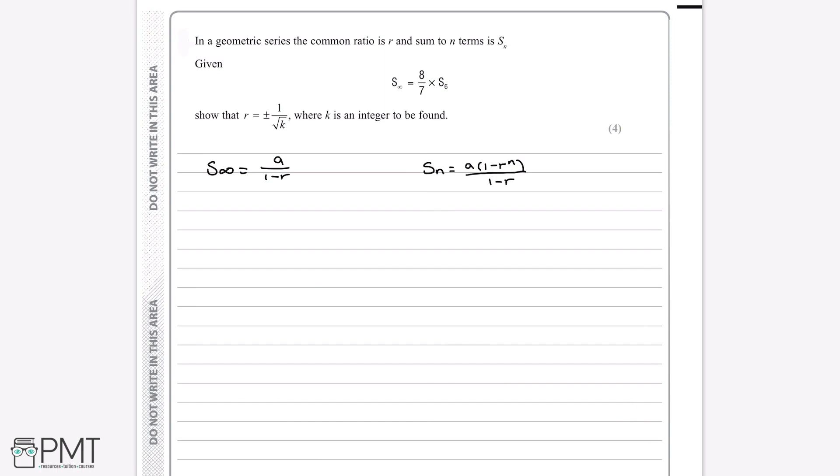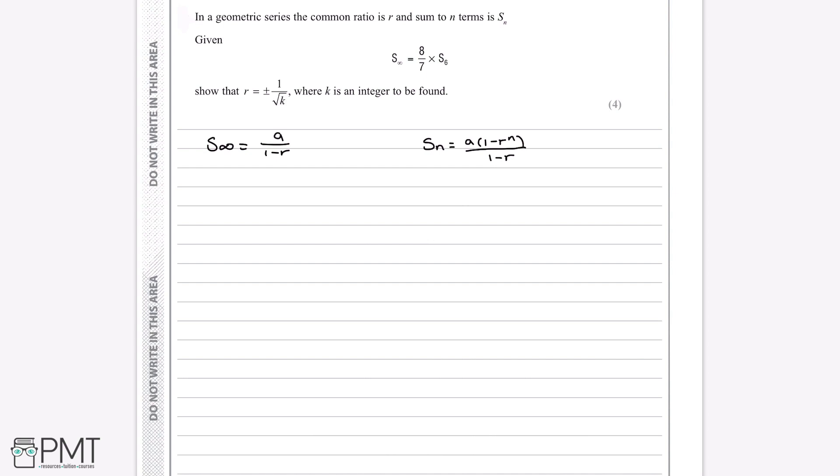So now we have these two formulas, we can put them into the equation that we were given. So the sum to infinity is a divided by 1 minus r, and then we have 8 over 7 multiplied by the sum of the first 6 terms. So all this means is that in the sum of n terms formula we have, we replace n with 6, so we have 1 minus r to the power of 6 instead of n, and then this is all divided by 1 minus r. Now writing out the formula in this form gives us our first mark, because we've shown we know the formulas and we know how to use them in context.